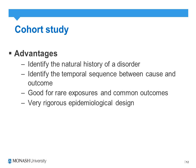Cohort studies have several advantages. First, they can identify the natural history of a disorder, comparing the exposed and not-exposed groups. They can also identify a temporal sequence between cause and effect — that is, the time period between exposure and the first onset of the outcome. They are rigorous epidemiological designs; the only bias they cannot control for is selection bias, and they are also very good for rare exposures and causes.